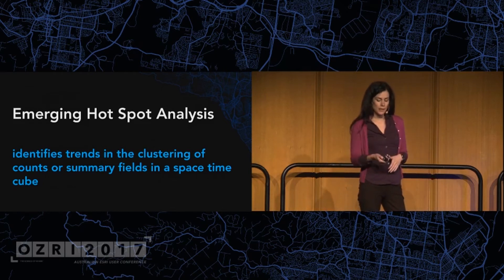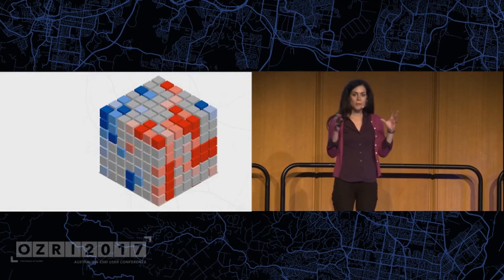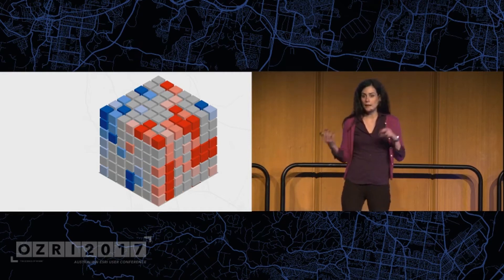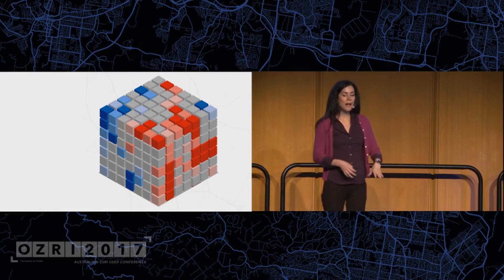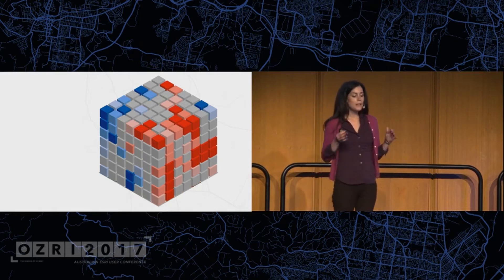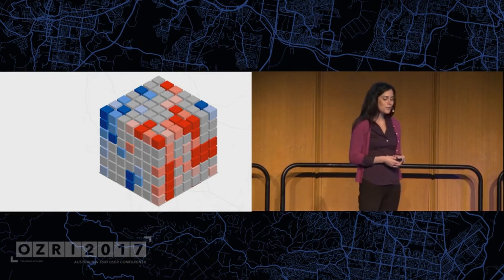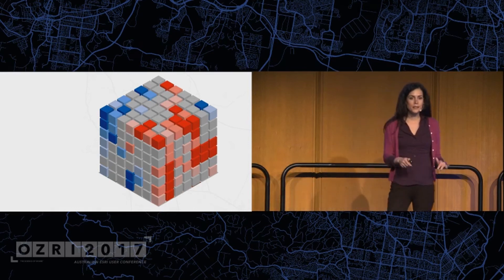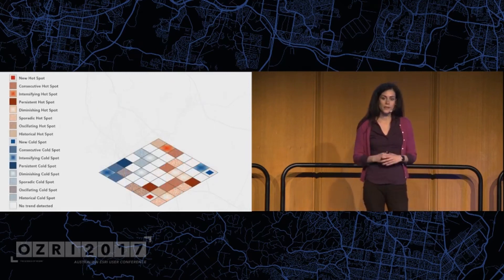Once we have incidents aggregated into the space-time cube, we can start applying methods like a hotspot analysis in 3D. We call that an emerging hotspot analysis. An emerging hotspot analysis looks at all your features in relation to their neighbors in both space and time to determine if each bin belongs to a cluster of high values, a cluster of low values, or if it's just a random pattern. Just looking at the 3D bins in space is not really easy enough to understand — you could have millions of these bins — so we also digest it into a 2D output as well.